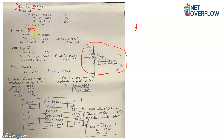First, take equation number one: x1 + 2x2 = 2000. Put x1 = 0, you get x2 = 1000. Then put x2 = 0, you get x1 = 2000. So from the first equation you get two points: (0, 1000) and (2000, 0).